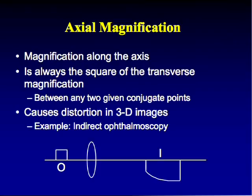Axial magnification is magnification along the axis, and it equals the square of the transverse magnification between any two conjugate points. This causes distortion in 3D images: if the image height is twice the object height, the image depth is four times — the square of two — producing depth distortion.